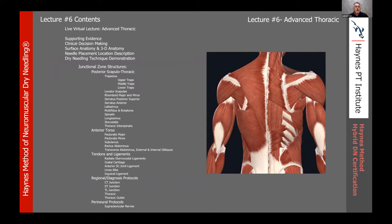Here tonight, lecture number six in our Haines Method Hybrid DN Certification — we're talking about the advanced thoracic piece. We'll look at the posterior scapular thoracic region: upper, middle, and lower traps, levator scap, rhomboids major and minor, serratus posterior superior, serratus anterior, latissimus, multifidus, rotatoris, spinalis, longissimus, iliocostalis, and thoracic interspinalis. Moving to the anterior torso: pec major, minor, subclavius, rectus abdominis, transversus abdominis, external and internal obliques. Then tendons and ligaments, regional diagnosis protocols covering CT junction, scapulothoracic junction, thoracolumbar junction, thoracic spine, and thoracic outlet syndrome.